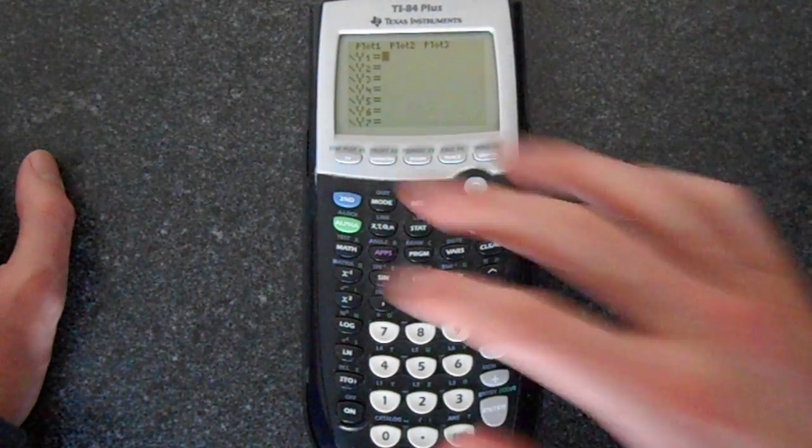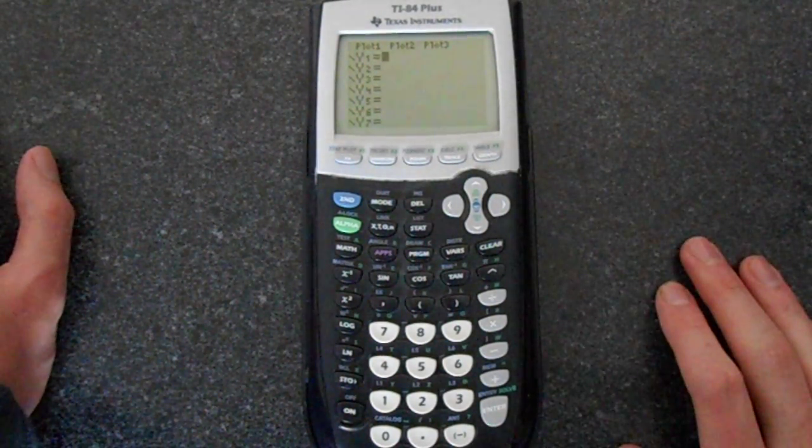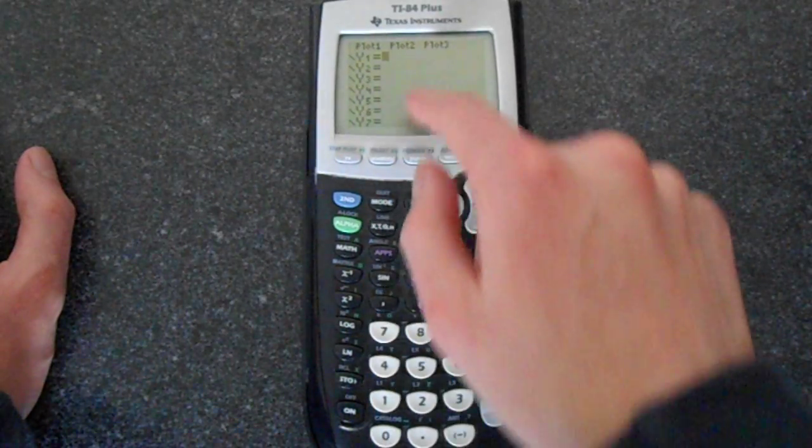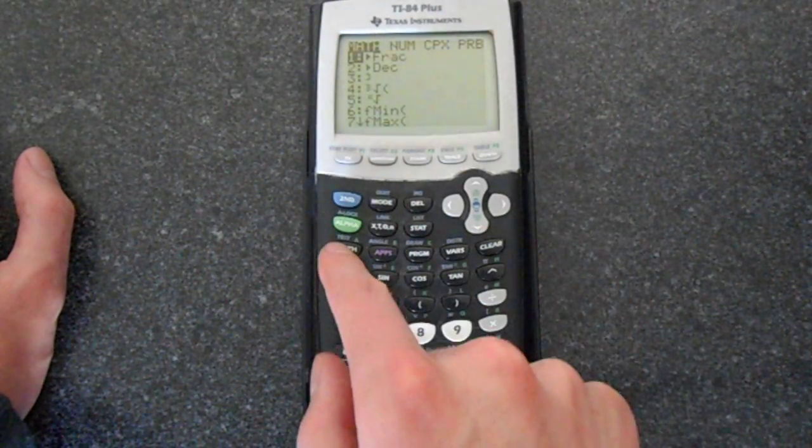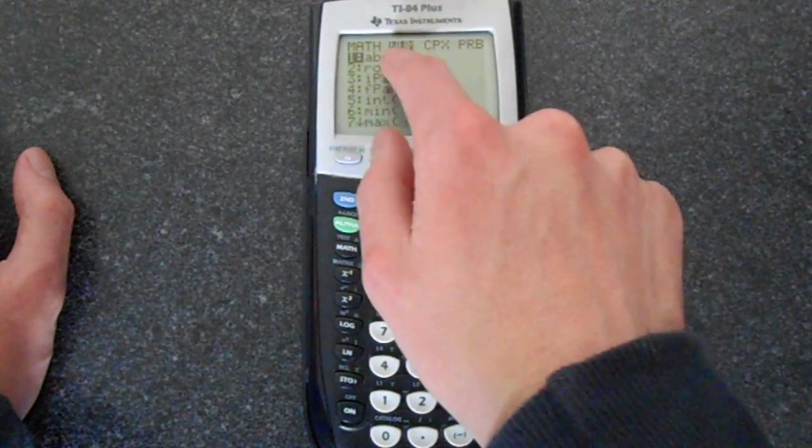Now let's do the graph. Assuming the calculator is cleared if you followed those steps, go to math - you'll see where it went to y equals then math, and then go along to num.